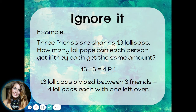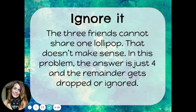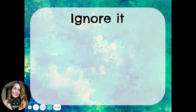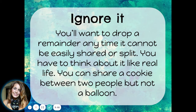So what that means is if we divide up 13 lollipops between three friends, they will each get four lollipops, and there'll be a lollipop left over. If three friends can't share one lollipop, that doesn't make sense — it's not very possible to cut a lollipop into three equal pieces. In this problem, the answer is just four, and the remainder gets dropped or ignored. Each friend will just get four lollipops, and we'll set that extra one to the side. You'll want to drop or ignore a remainder any time it cannot be easily shared or split.